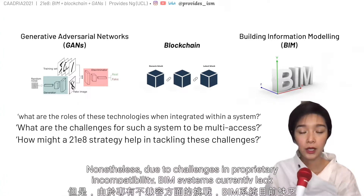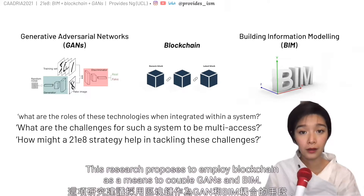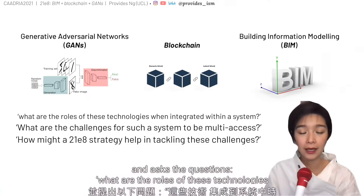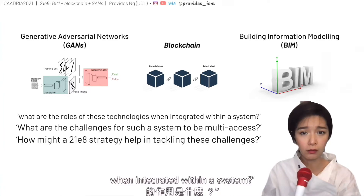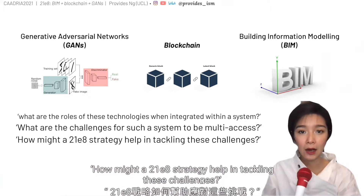Nonetheless, due to challenges in proprietary incompatibility, BIM systems currently lack a secured yet transparent way of freely integrating with crowdsourced efforts. This research proposes to employ Blockchain as a means to couple GANs and BIM with 21E8 as a networking strategy to facilitate data communication and distribution. The key questions are: what are the roles of these technologies when integrated within a system, what are the challenges for such a system to be multi-access, and how might a 21E8 strategy help in tackling these challenges?